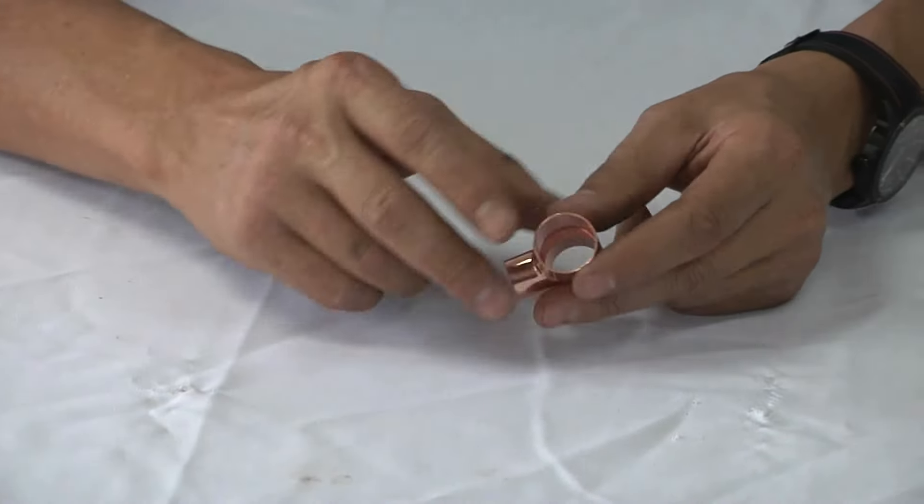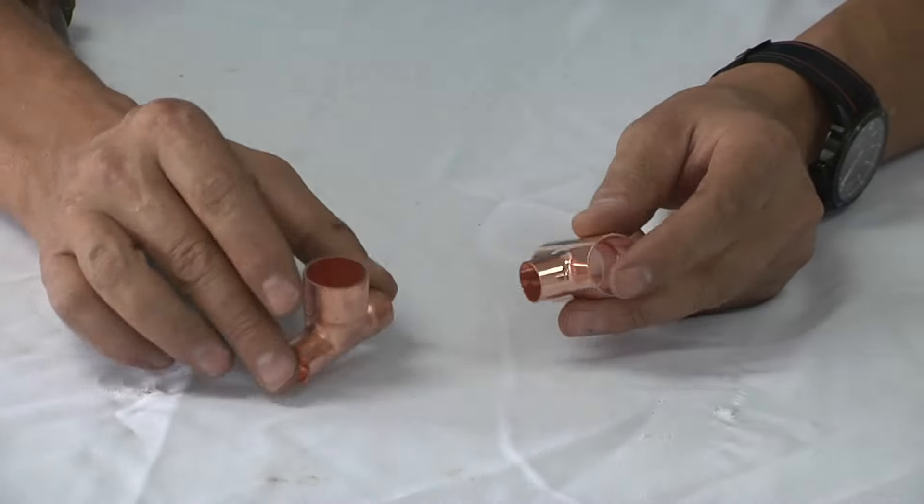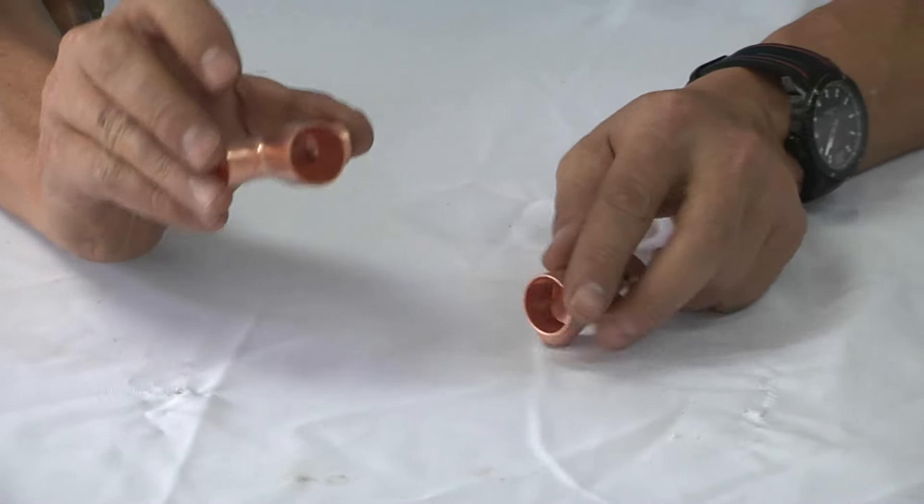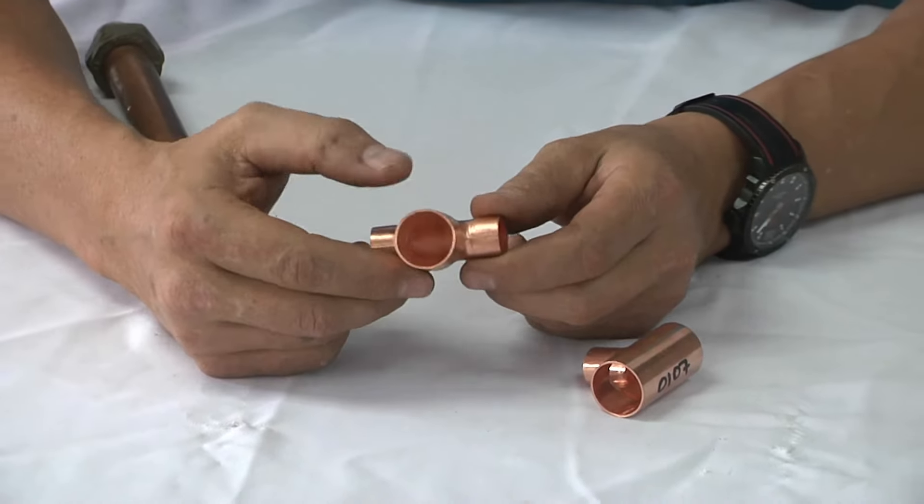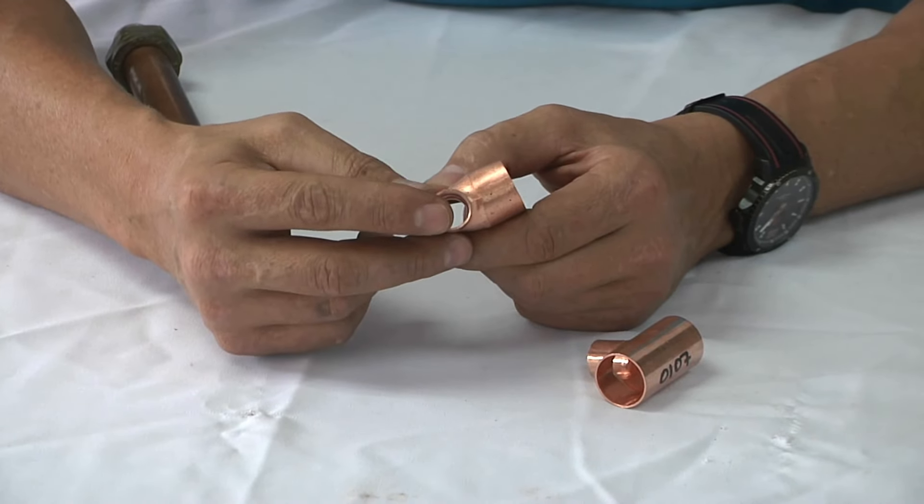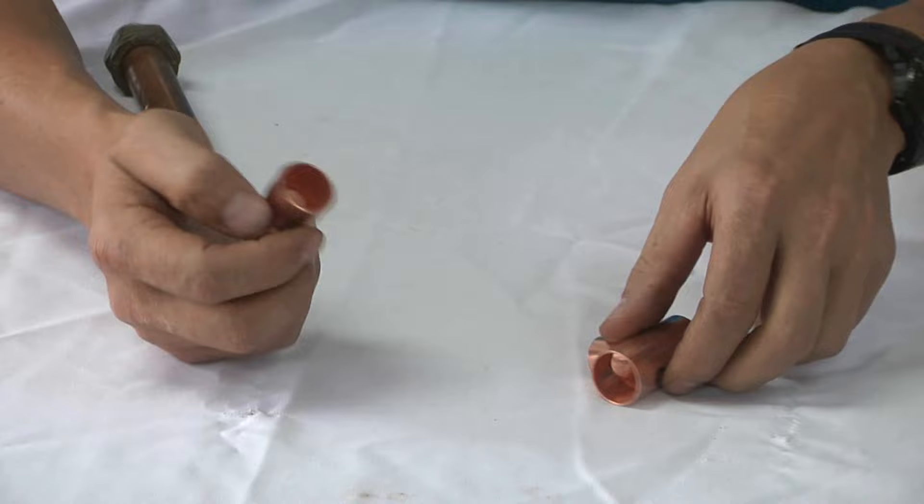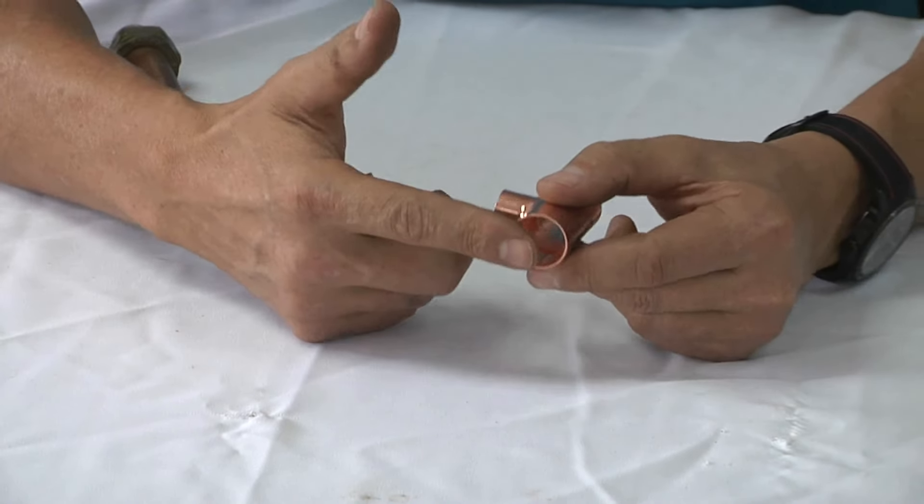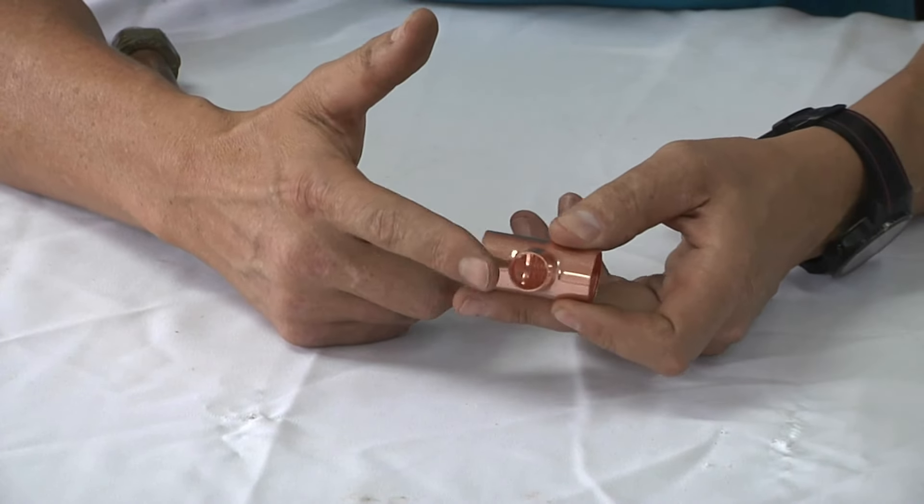Then we have another tee piece. You can see the center is increasing the size to 22 millimeter coming from a 15 millimeter pipe. You can see this one is coming from a 22 millimeter to a 15 millimeter pipe.